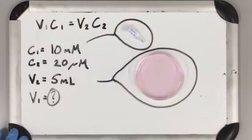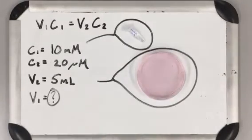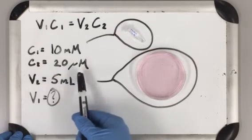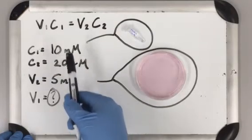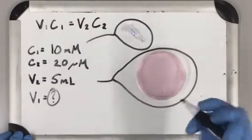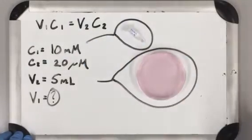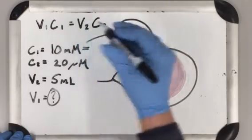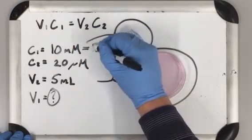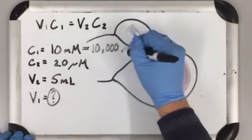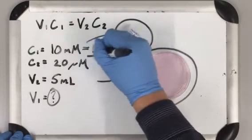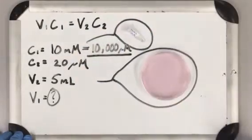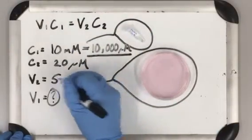Right now these are in different notations—millimolar and micromolar. So what I'm going to do is equate this: 10 millimolar is the same thing as 10,000 micromolar. Those are equal.